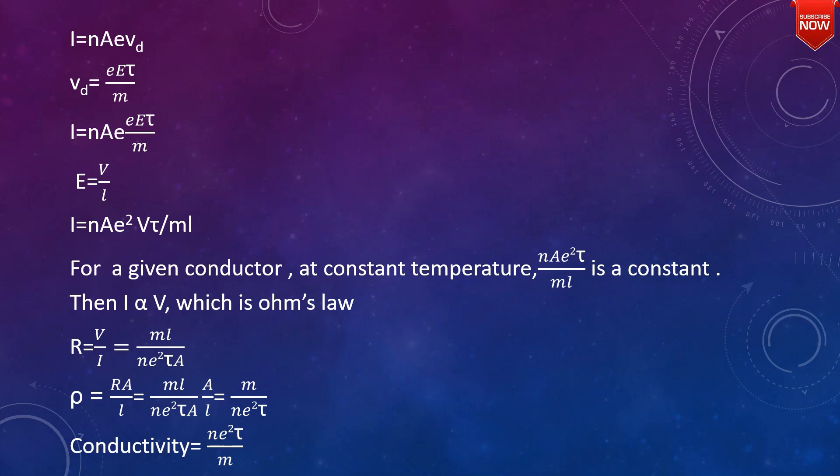At constant temperature, the current passing through the conductor is directly proportional to the potential difference between the ends. This gives us the resistance equation R = V/I.